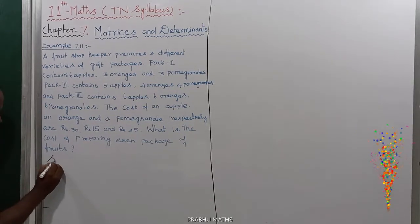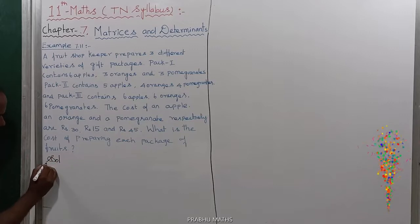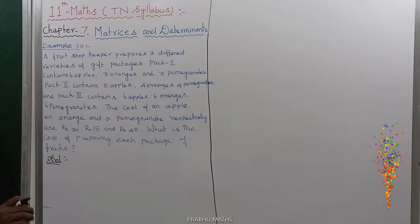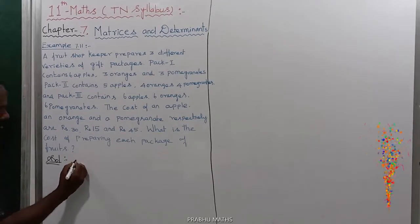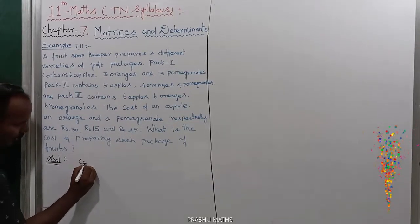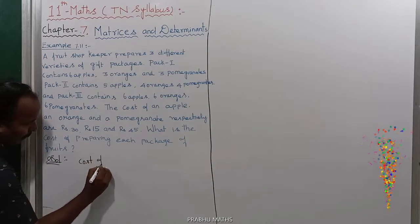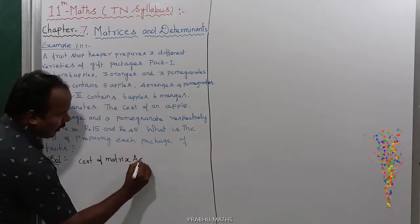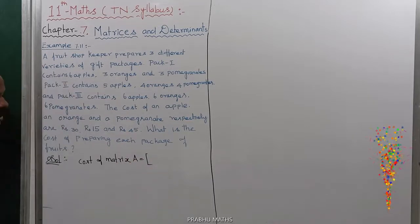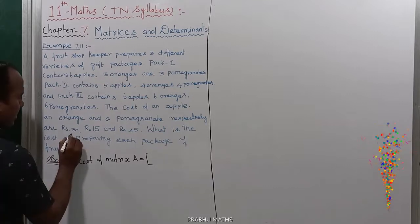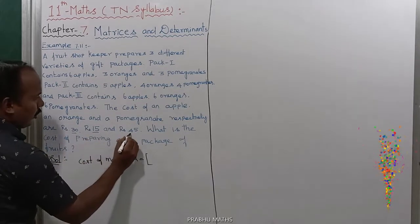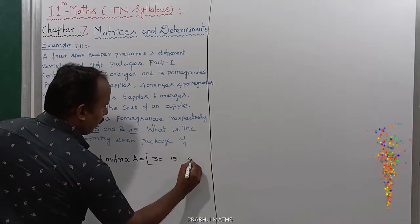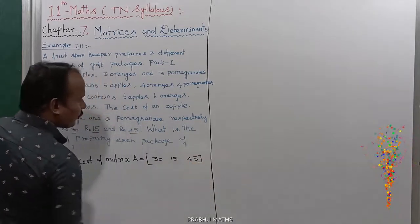First, find the given values. Cost matrix - let us consider it as A. The cost matrix A is: first one is 30, second one is 15, third one is 45. So A = [30, 15, 45].